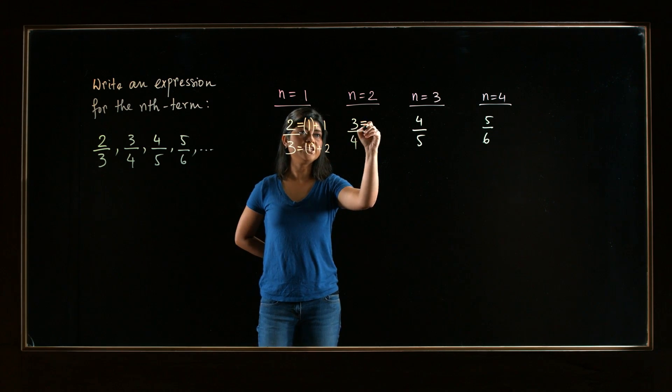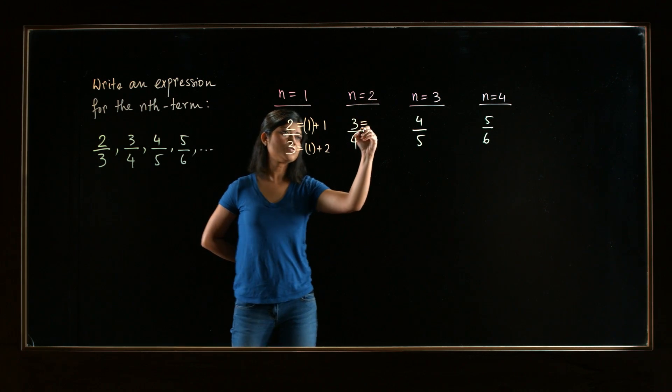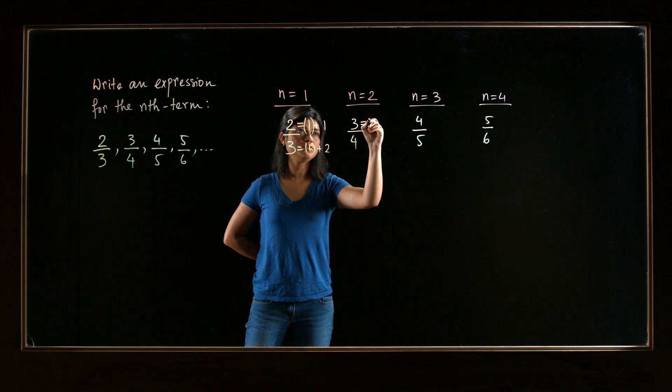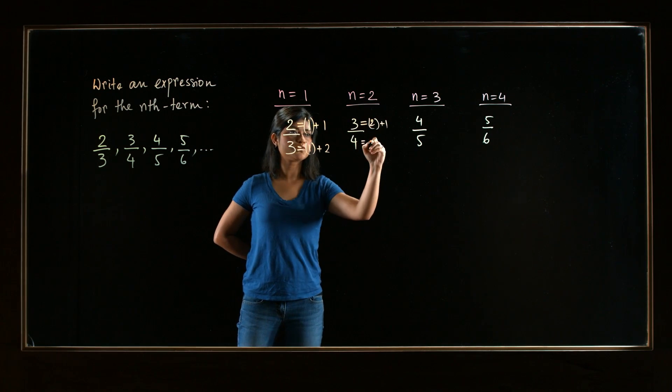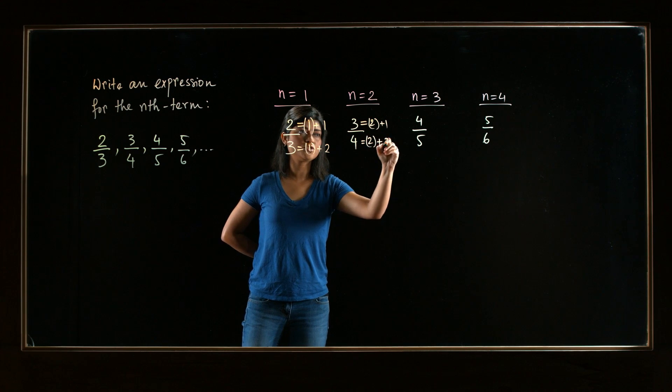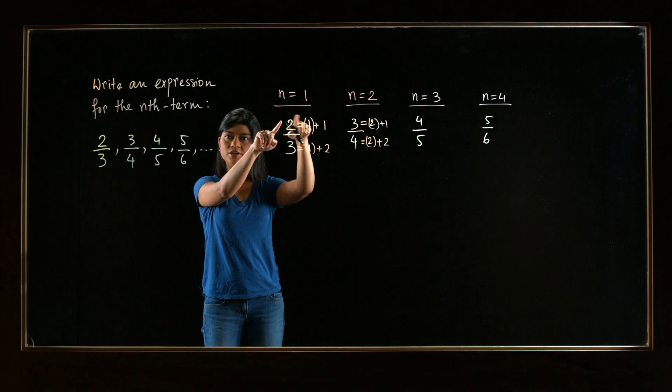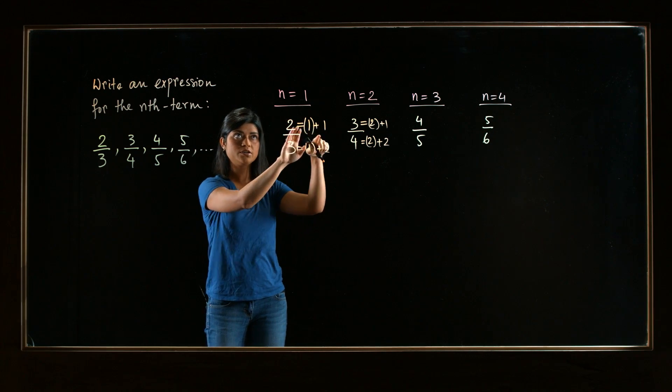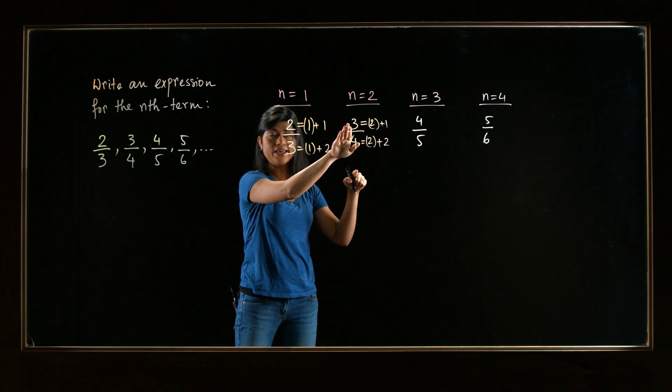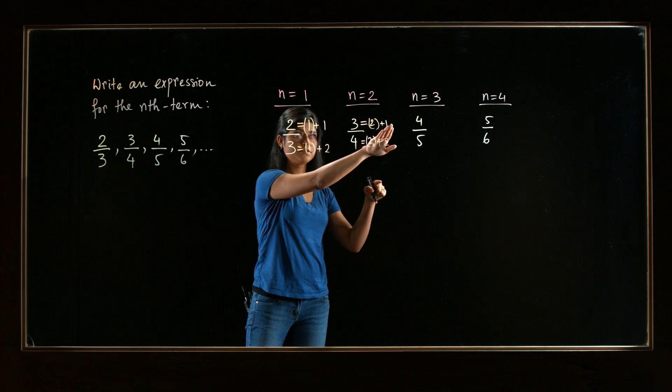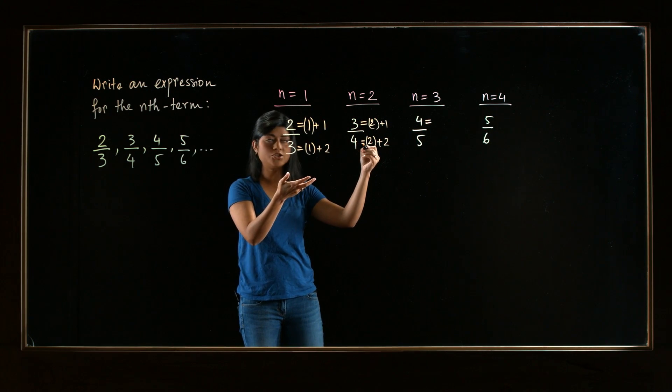So now, look at the numerator 3. And we have to rewrite it in terms of 2 somehow. So this is, of course, 2 plus 1. How about the denominator? 4 is equal to, in terms of 2, is 2 plus 2. Now, immediately, do you notice there's a pattern? For the first number, just the numerator was n value plus 1. For the n equals 2, the numerator is, again, n plus 1.